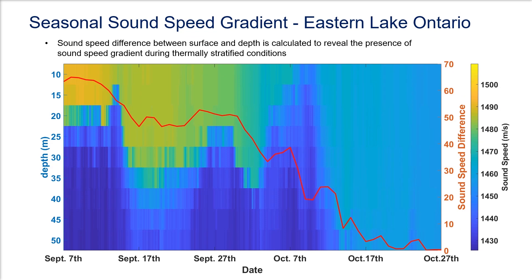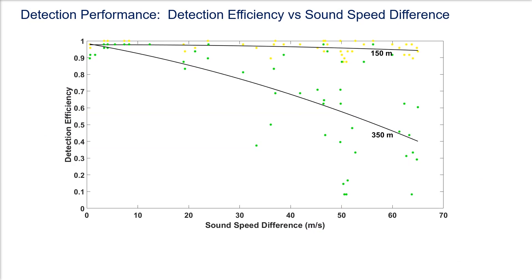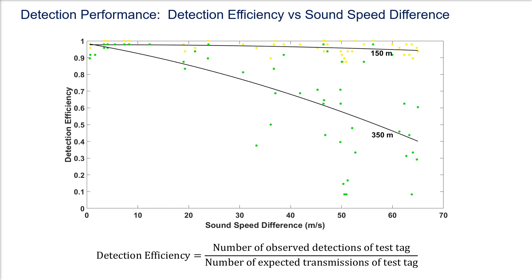Calculating the sound speed difference over the duration of our study in Eastern Lake Ontario, we see that the sound speed gradient is most pronounced in September when thermal stratification is present. Under isothermal conditions toward the end of October, the sound speed gradient no longer exists. Using the detection data from our reference fish tags, we can examine the effect of a sound speed gradient on acoustic detection performance by plotting detection efficiency versus sound speed difference. Detection efficiency is calculated as the number of reference fish tag detections on a given receiver divided by the number of expected transmissions during a particular time period.